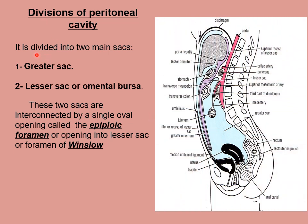The peritoneal cavity is divided into two main sacs: the greater sac and the lesser sac or omental bursa. These two sacs communicate with each other through an opening called the epiploic foramen or foramen of Winslow. Looking at this sagittal section diagram, the parietal peritoneum lines the abdominal and pelvic wall while the visceral peritoneum covers the viscera. The entire space between the two layers is the peritoneal cavity, divided into the greater sac shown in light blue and the lesser sac shown in purple.